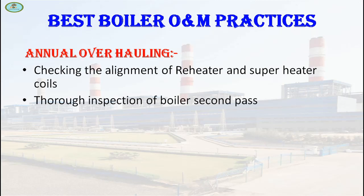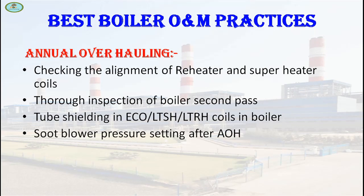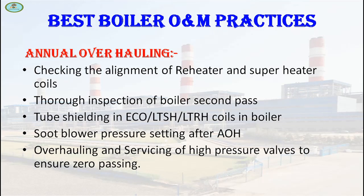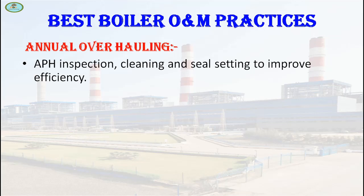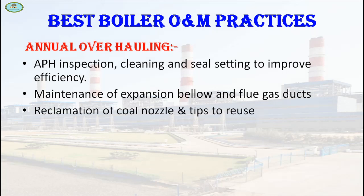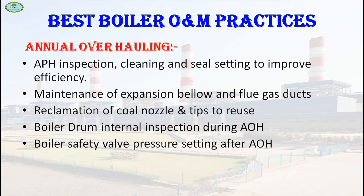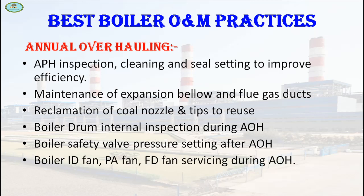Next one is annual overhauling. Activities include checking the alignment of reheater and superheater coils, thorough inspection of boiler second pass tube shielding in economizer, superheater, and reheater coils. Also, soot blower pressure setting after overhauling, overhauling and servicing of high pressure valves to ensure zero passing, APH inspection, cleaning and seal setting to improve boiler efficiency, maintenance of expansion bellows and flue gas ducts, reclamation of coal nozzles and tips for reuse, boiler drum internal inspection during annual overhauling, boiler safety valve pressure setting after annual overhauling, and servicing of boiler ID, PA, and FD fans during annual overhauling.